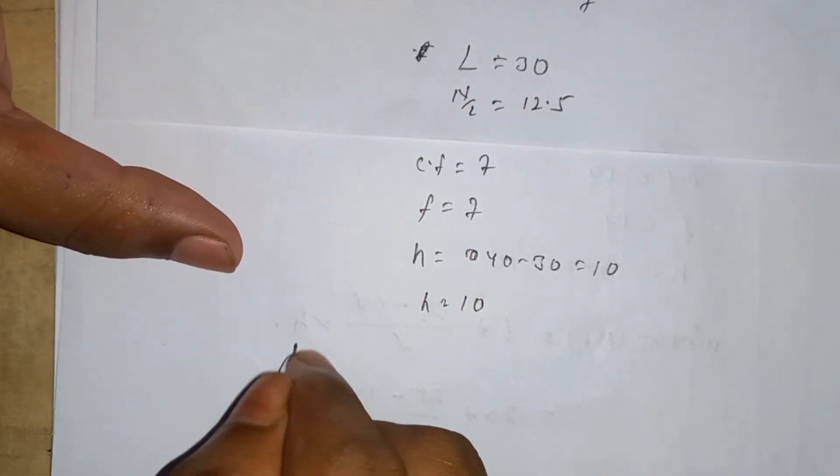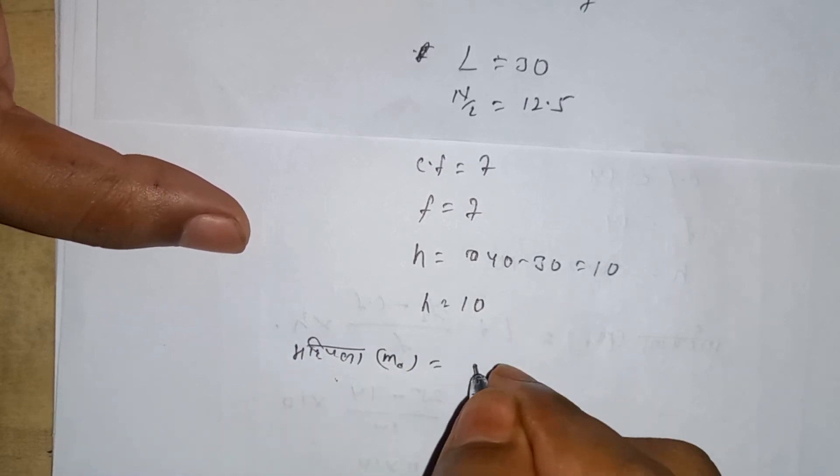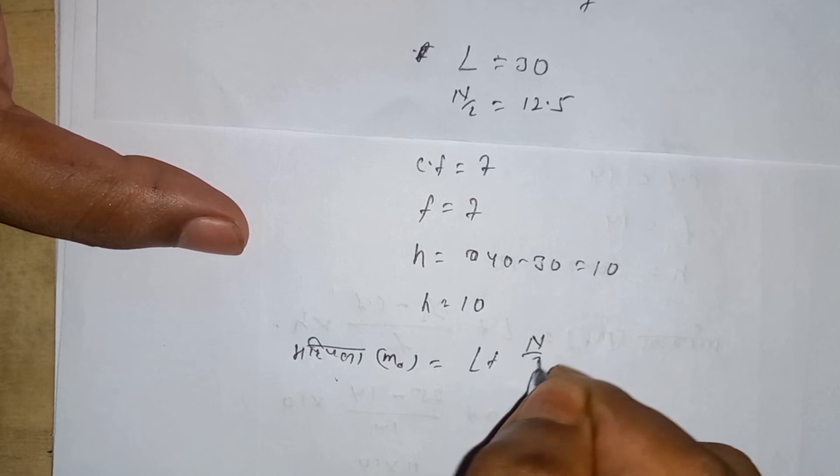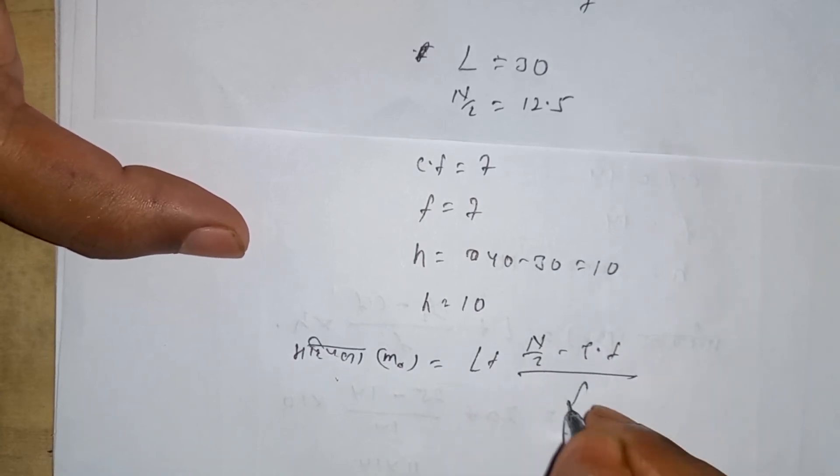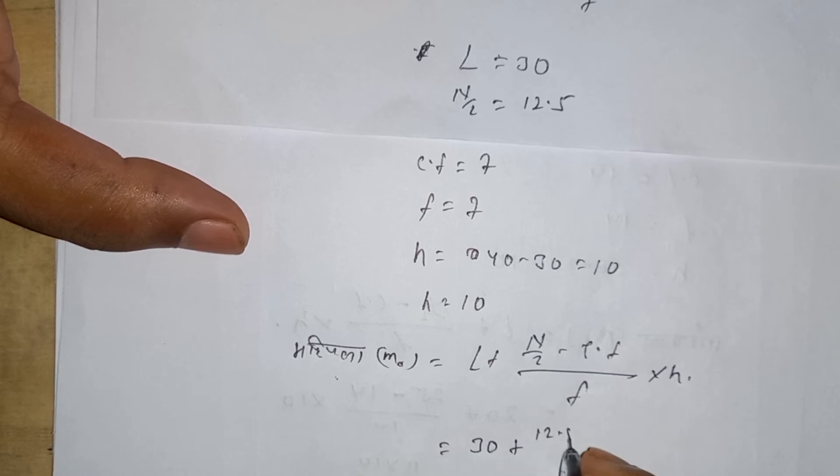Now using the median formula: median equals L plus N by 2 minus cf divided by f into h. L equals 30, plus 12.5 minus cf which is 7, divided by f which is 7, into 10.